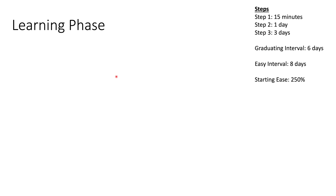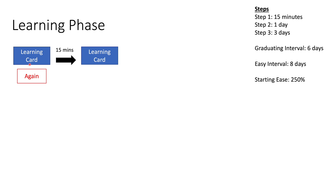Let's say you put your first brand new flashcard in Anki. When you first enter it, it's a learning card because you're still learning the content. Pretend this card is really hard and you hit Again. Whenever you're in the learning phase and you hit Again, you automatically go to the very first step. Our first step says 15 minutes, meaning you'll have to wait 15 minutes before the card is shown to you again. Any time you hit Again in any step, you go back to step one.